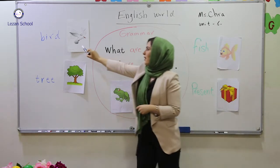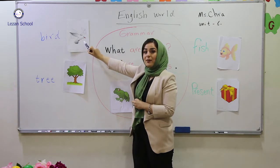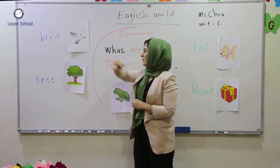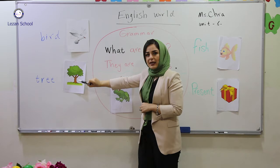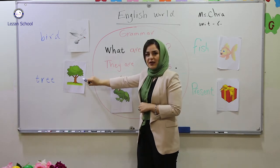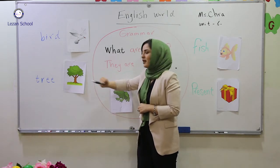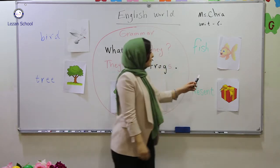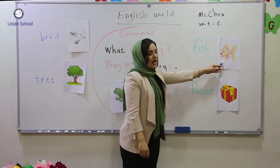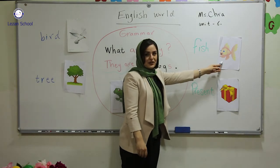This is a bird. It's a white bird. Tree — it's a green tree. Fish — it's a yellow fish.